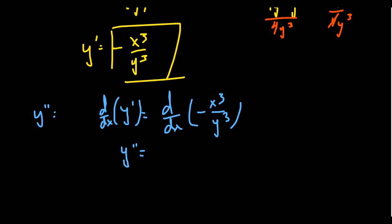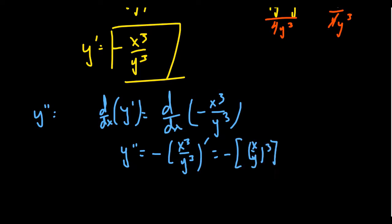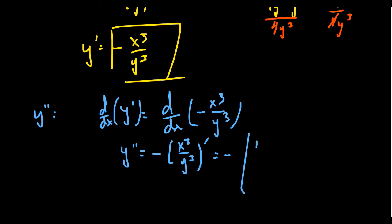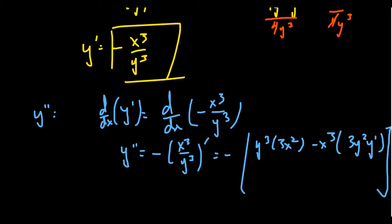We can factor out the negative sign and apply the quotient rule to x cubed over y cubed. Neither rewriting this avoids the quotient rule, so using the standard quotient rule — low d high minus high d low over low squared — we get: y cubed times 3x squared, minus x cubed times 3y squared times y prime, all over y cubed squared, which is y to the sixth.